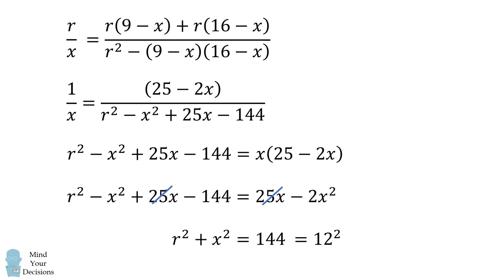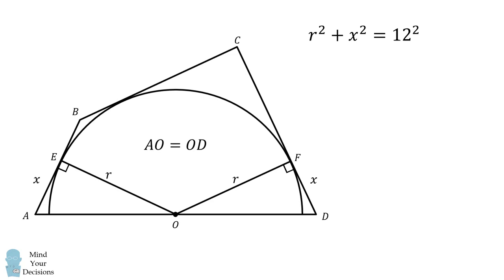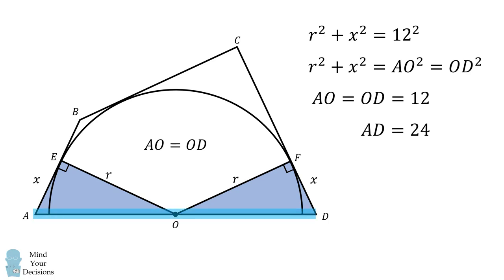We thus have solved for the value of r squared plus x squared, and that's exactly equal to AO squared, and exactly equal to OD squared. Thus, AO is equal to OD is equal to 12, and AD is equal to AO plus OD, which is equal to 24. And that's our answer.